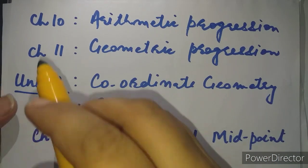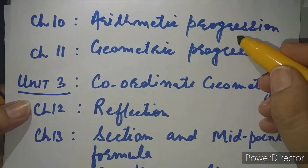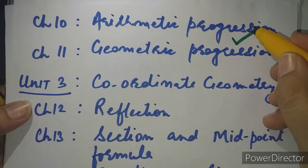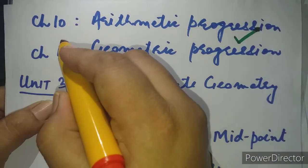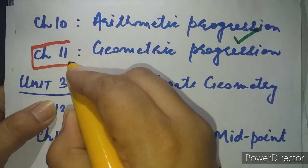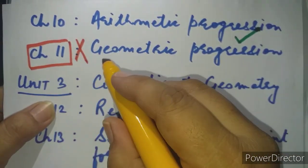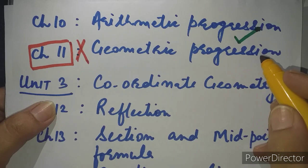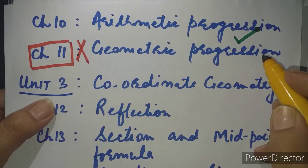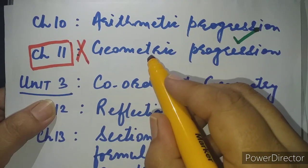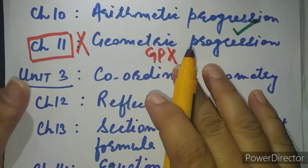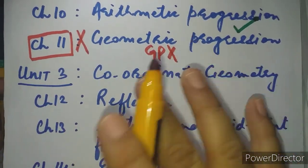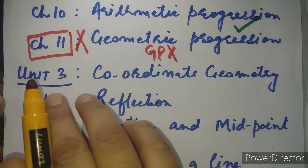Chapter 10, Arithmetic Progression, also gets a green signal — included full chapter as it is. Then comes Chapter 11, Geometric Progression (GP) — GP gets a red cross because it has been totally removed from the new prescribed syllabus for 2021. Not a single part of GP has been included, so GP goes completely from the new syllabus.